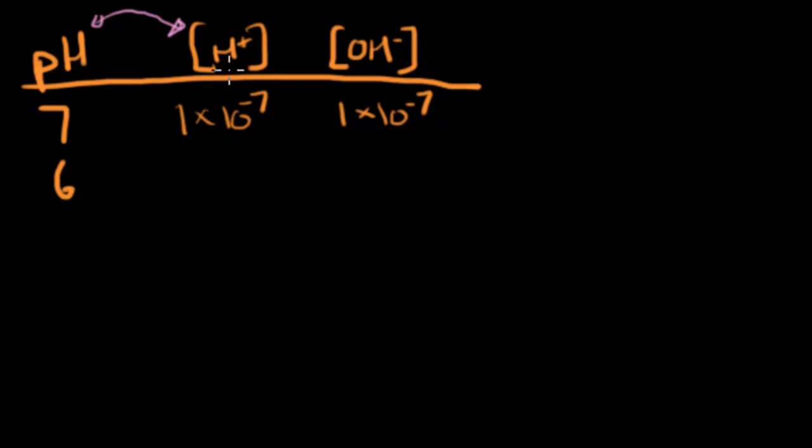At pH 6, I have a hydrogen ion concentration of 1 times 10 to the negative 6th. At pH 3, I have a hydrogen ion concentration of 1 times 10 to the negative 3rd. Starting to see a pattern yet? Let's do one more. At pH 12, I have a hydrogen ion concentration of 1 times 10 to the negative 12th.